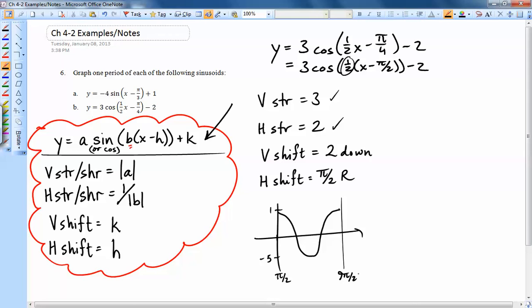So now we can graph. Let's do a formal graph where our axes are in the right places. High point is 1. Low point is negative 5. So that means that the line that goes down the middle of this graph will be at y equals negative 2.